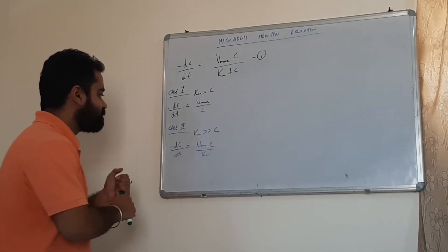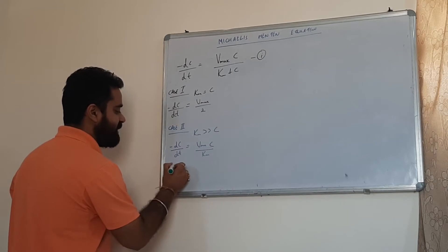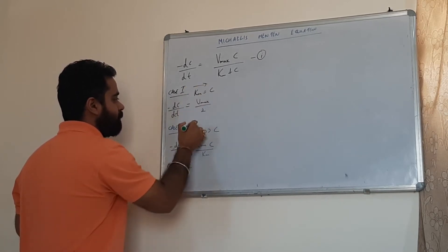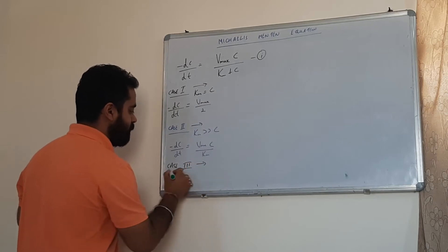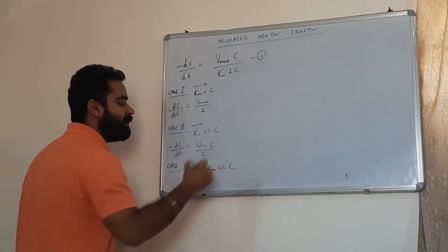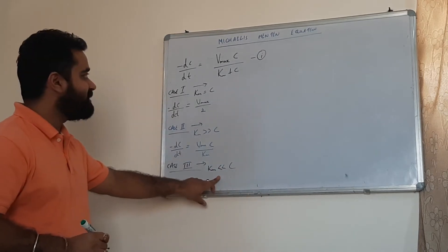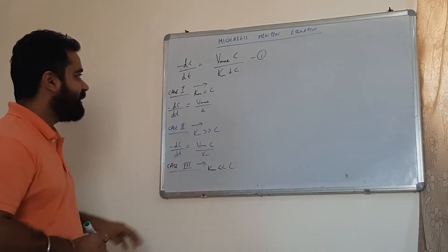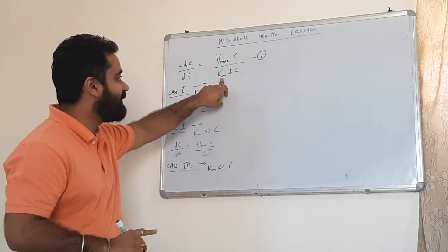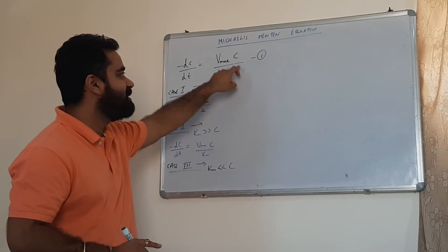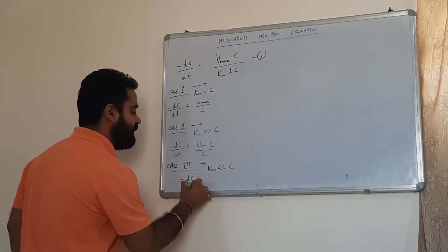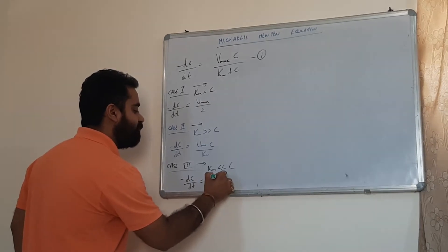In the third case, the value of Km is very small compared to c. Substituting this into equation 1, if Km is very small it can be neglected in the denominator. The c terms cancel, and hence minus dC/dt will be equal to Vmax.